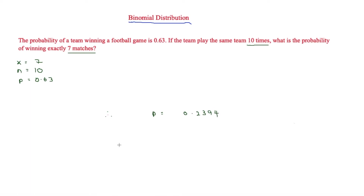Next we will look at the binomial cumulative distribution. This would be used if, for example, the team were to win more than or equal to seven matches, which would mean you need to find the probability of winning seven, eight, and nine matches and add them together.